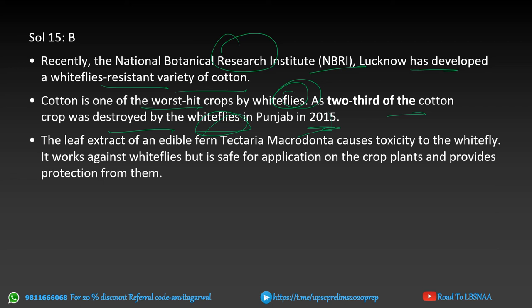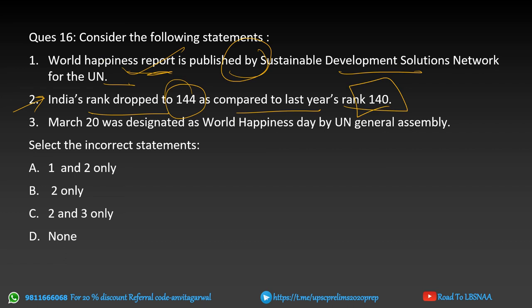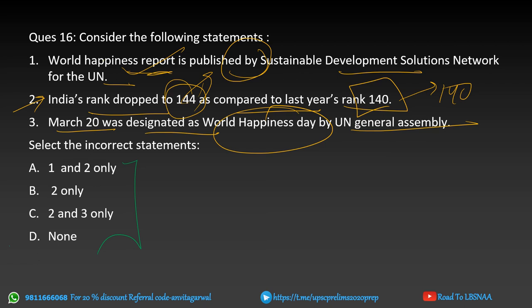Next — Sustainable Development Solutions Network (SDSN) of the UN. Statement one: the World Happiness Report is published by SDSN for the UN. Statement two: India's rank dropped to 144 compared to last year's rank of 140. Statement three: March 20 was designated as World Happiness Day by the UN General Assembly. The correct answer is option D — all three statements are correct. There is no incorrect statement here. The detailed explanation is available for you to read.